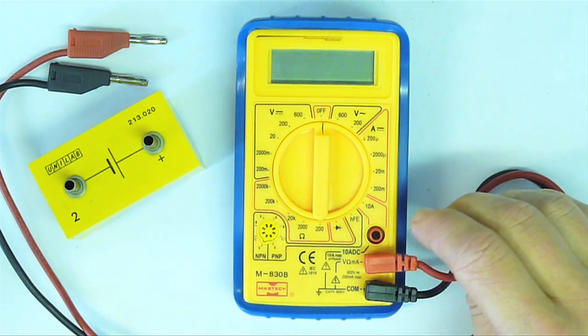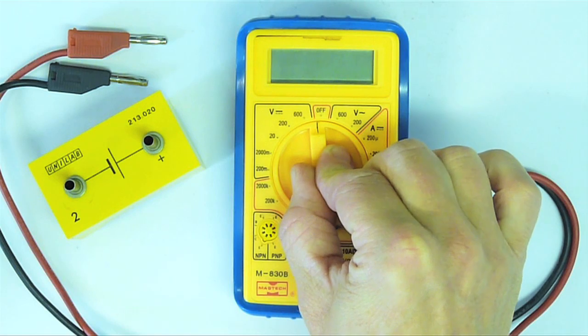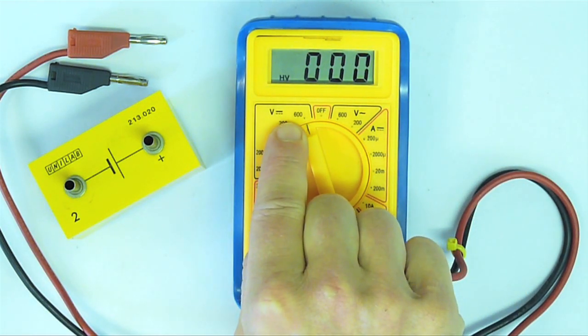To measure an unknown voltage, I always start off on the large range. This range here says 600, 600 volts. That's the full scale deflection. That means the largest voltage that the instrument will read on this range.